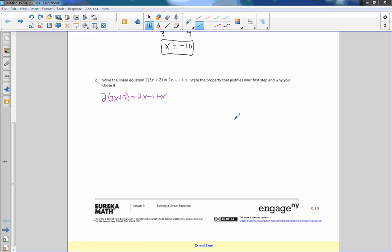So my first step is probably going to be distribution. I want to multiply this times this, I want to get rid of this parentheses. 2 times 3x is 6x, 2 times a positive 2 is positive 4. Equals, and then while I'm at it, I'm going to clean this up. I'm going to combine like terms. I have a 2x, I have another positive 1x, so 2x + x is 3x. And then the -1 is the only constant we have, so that comes down. Okay, so now I have distributive property on the left, combining like terms on the right.